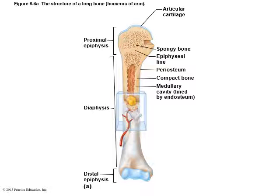Now we're going to talk about the structure of a long bone, looking at the humerus, which is the upper bone of the arm. There's a central shaft, and this central shaft is called the diaphysis. In anatomy, words that end in S-I-S, if pluralized, you change that to S-E-S — so diaphyses means more than one diaphysis.